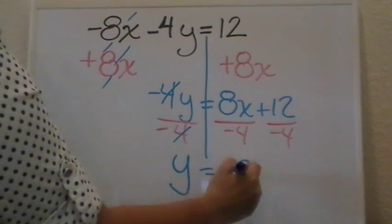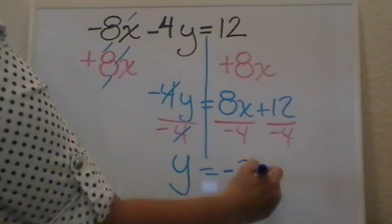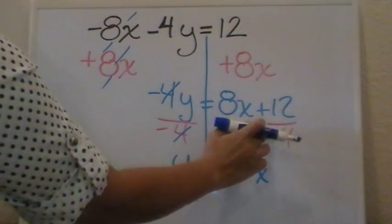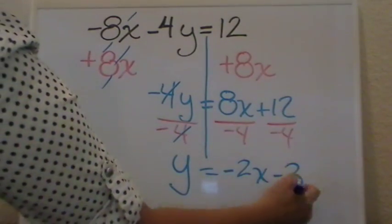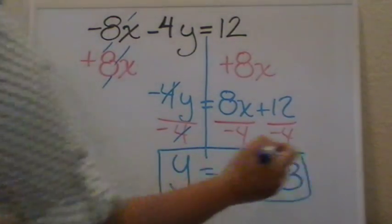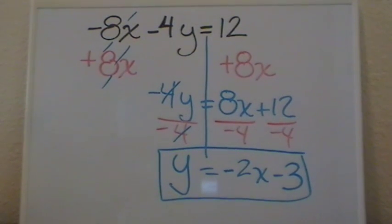8 divided by 4, 2, and we just drop the x. Then we have a positive divided by a negative, negative. 12 divided by 4, 3. And this right here will be our answer to isolate y.